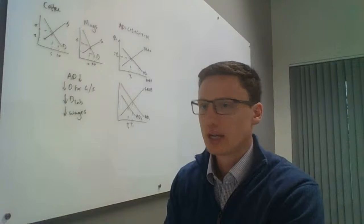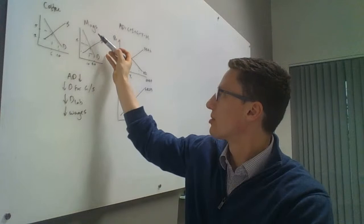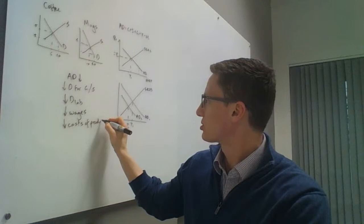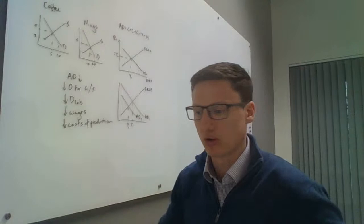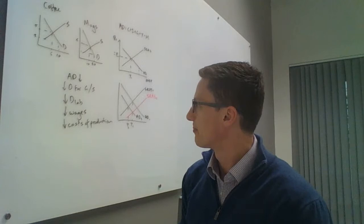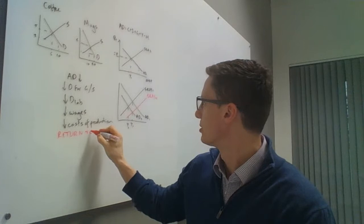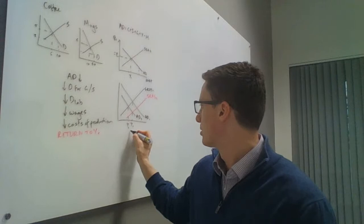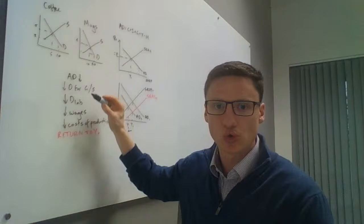If demand for labor falls in a perfect labor market, wages fall. Remember what happens if wages for coffee or mug manufacturers fall — we shift costs of production down and the supply curve moves to the right. When costs of production fall in individual markets, we reflect that on the macro diagram: the short run aggregate supply curve shifts to the right, and therefore we return back to Y1. We suffered a fall in demand, entered a recession, had a negative output gap from Y1 to Y2, but we return to Y1.